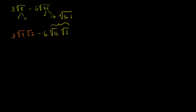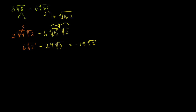What does the first term simplify to? The square root of 4 is 2, so you have 3 times 2 times the square root of 2, which is 6 times the principal root of 2. Then we subtract: the square root of 16 is 4, so 6 times 4 is 24 times the square root of 2. If I have 6 square roots of 2 and subtract 24 square roots of 2, that's 6 minus 24, which is negative 18 square roots of 2. Just like 6x minus 24x equals negative 18x — instead of x, we just have the square root of 2.